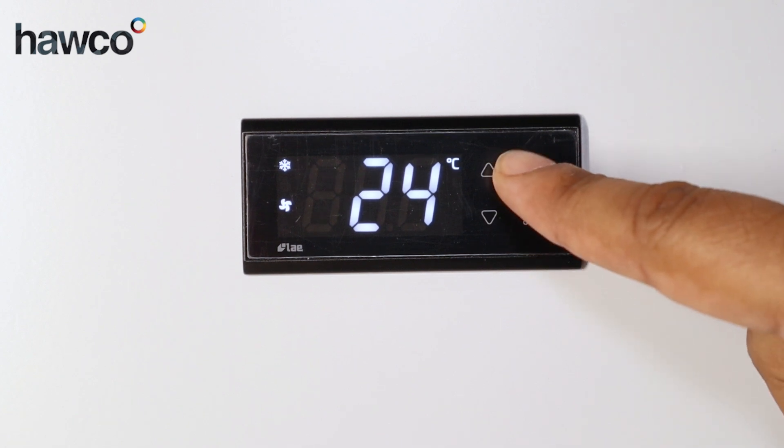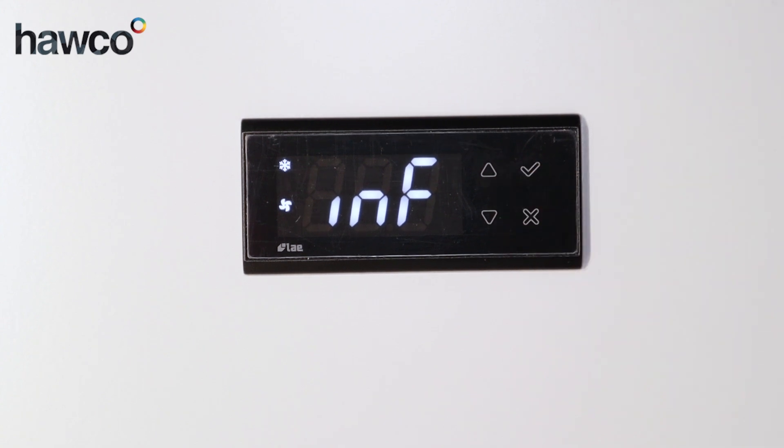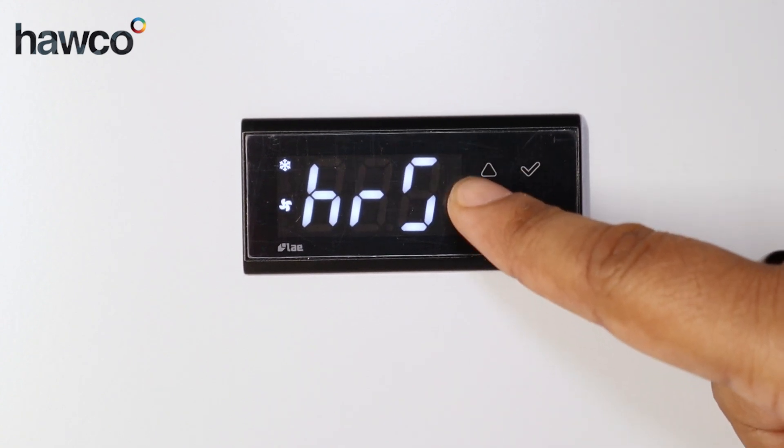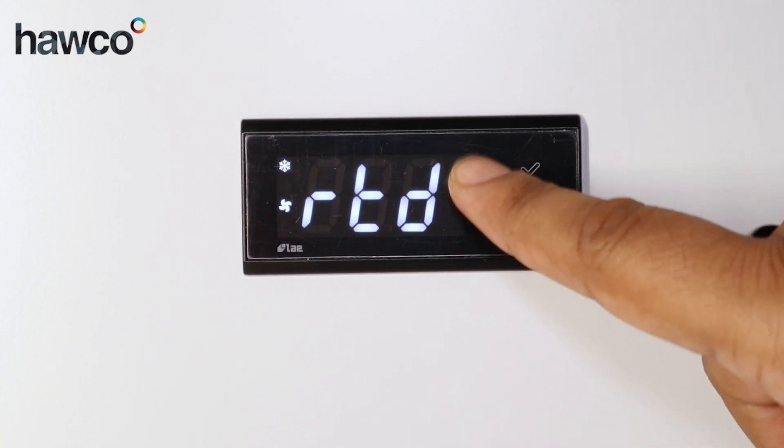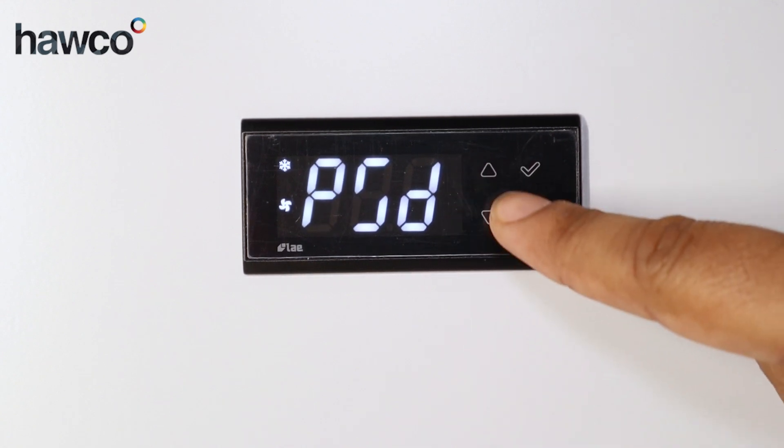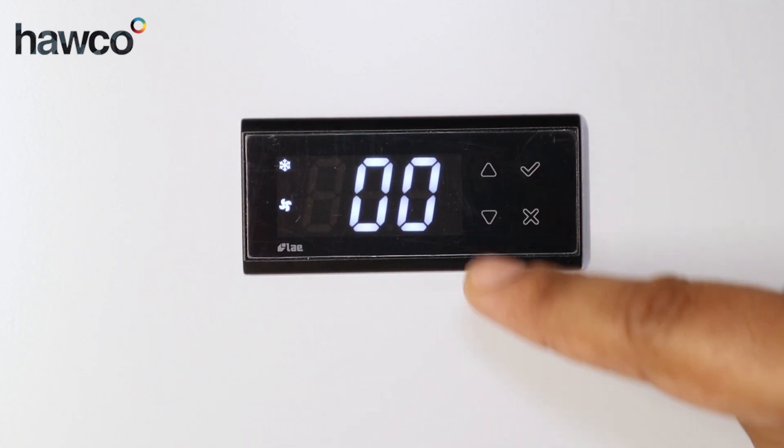To do this, push the tick button once, use the up and down arrows until you get to letters PSD, then push again on the tick button.